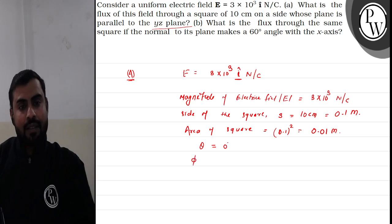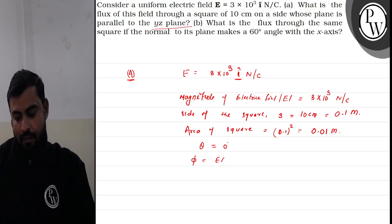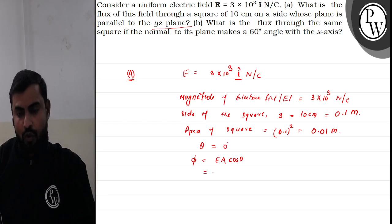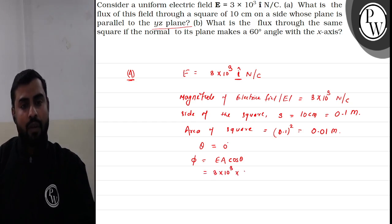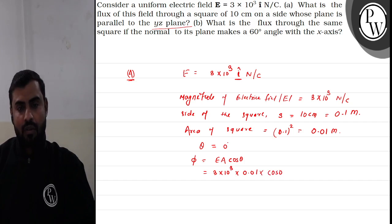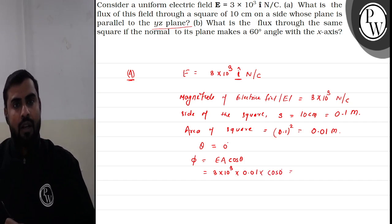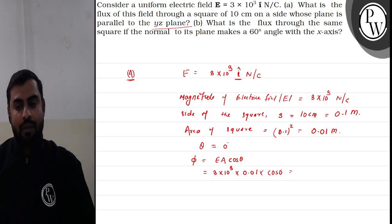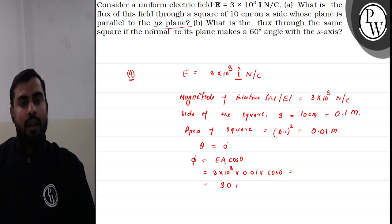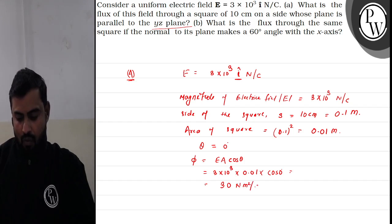Now we can find the flux. Flux can be written as E A cos theta. The value of E is 3 into 10 raise to the power 3, area is 0.01, and the angle is 0 degrees. So we take cos 0, whose value is 1. When we calculate it, we get flux equal to 30 Newton meter square per coulomb.